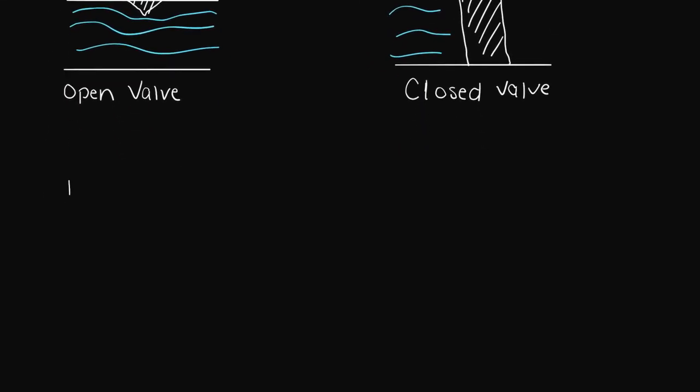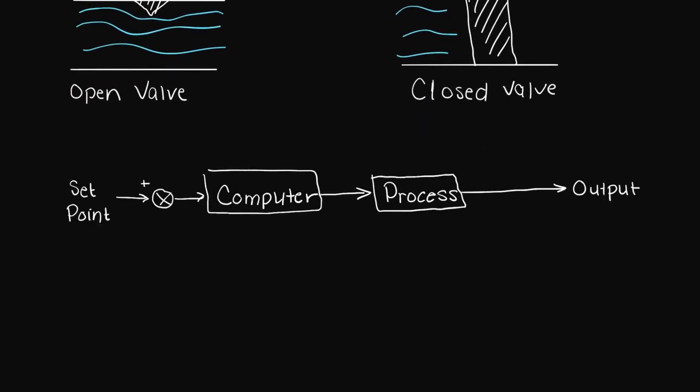You may also see a simple closed loop control system that looks like this and the only thing that is different is the actuator and sensor are equivalent to one. This is typically done in introductory control system classes to simplify problems and uses the assumption that the sensor and actuator are operating perfectly.